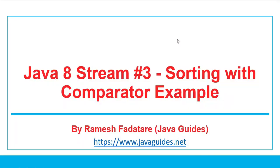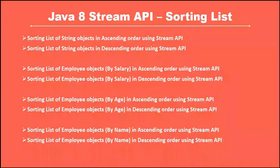Hi everyone, welcome to the Java Stream API series. This is the third part, and in this part we are going to learn how to do sorting using the Stream API — sorting in ascending order and descending order. We'll create lots of examples demonstrating how to sort a list of different objects, starting with how to sort a list of string objects in ascending and descending order.